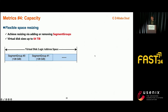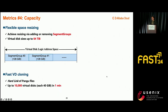Metric 4: Capacity. The segmentation design enables EBS with seamless support for virtual disk resizing by adding or removing segment groups. EBS currently supports virtual disk sizes ranging from 1 GB to 64 TB. Thanks to the hardlink feature of Pangu files, EBS now allows the creation of up to 10,000 virtual disk snapshots in just one minute.